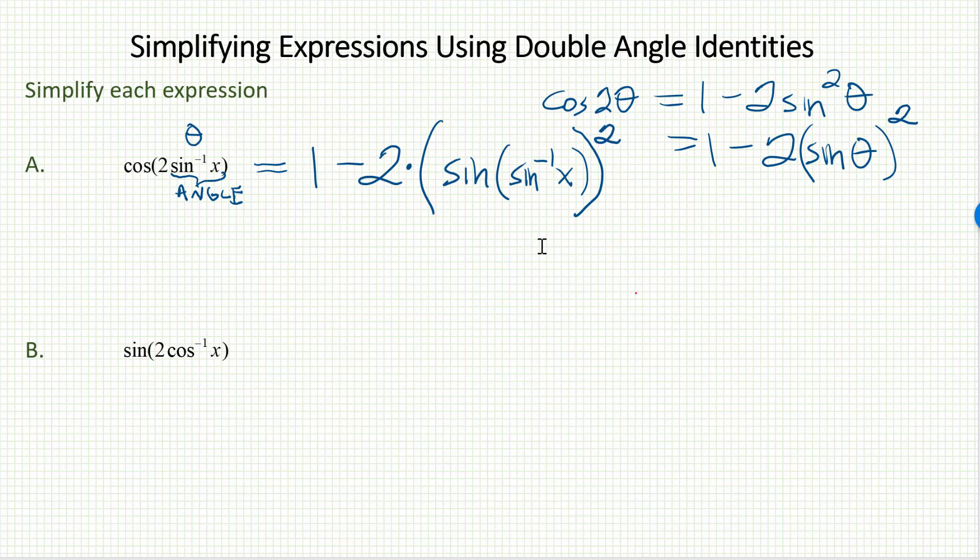1 minus 2 sine squared theta. Take the sine ratio of the angle and square it. You say, I don't think we're making this thing any better. No, we've just made it a ton better because sine and sine inverse, they're inverse functions. They wipe each other out. The sine ratio of the angle whose sine ratio is x is, of course, x.